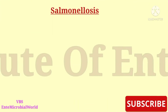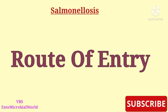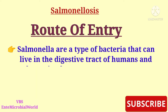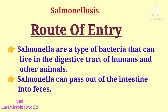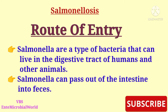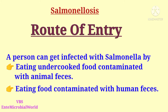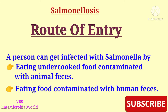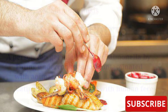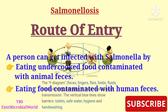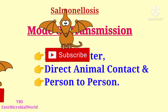Salmonella are a type of bacteria that can live in the digestive tract of humans and other animals. Salmonella can pass out of the intestine into feces. A person can get infected with salmonella by eating undercooked food contaminated with animal feces, or eating food contaminated with human feces. This can happen if a food worker does not wash their hands before handling food.